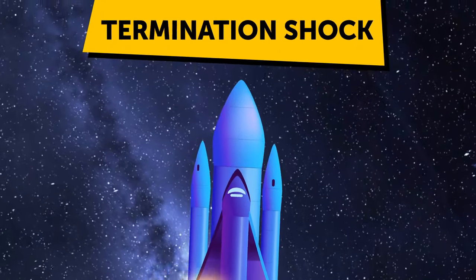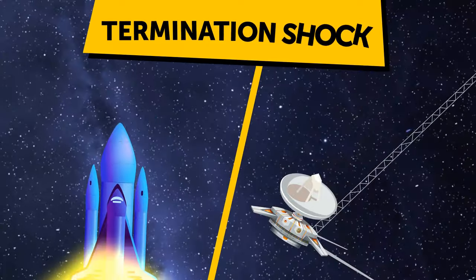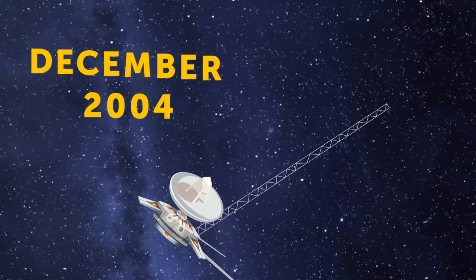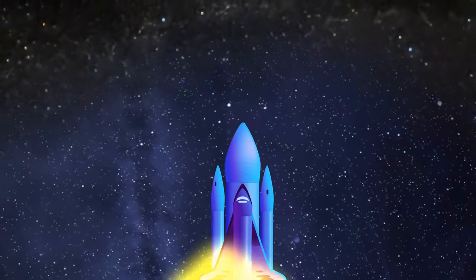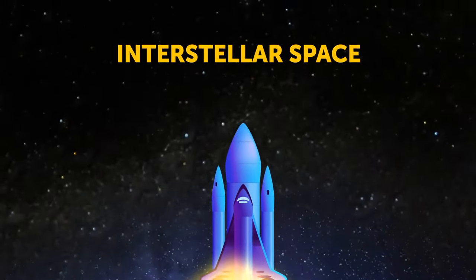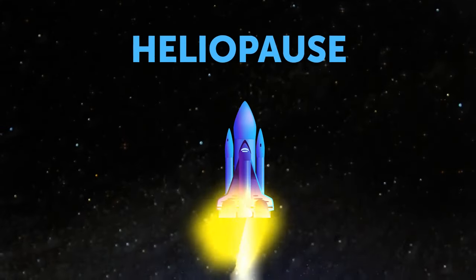The Voyager 1 space probe got to this point in December 2004. We're moving to the region where the heliosphere ends and interstellar space begins. This is the heliopause.